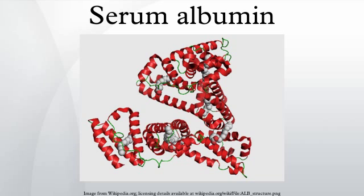Albumin is synthesized in the liver as pre-proalbumin, which has an N-terminal peptide that is removed before the nascent protein is released from the rough endoplasmic reticulum. The product, proalbumin, is in turn cleaved in the Golgi vesicles to produce the secreted albumin.